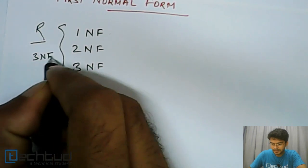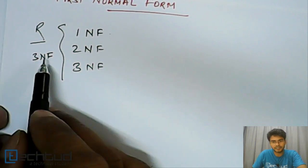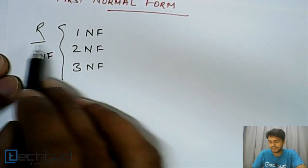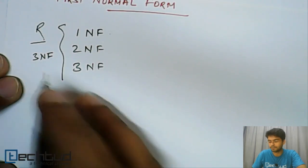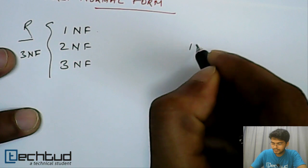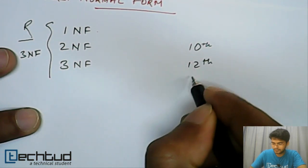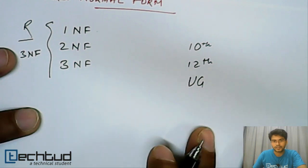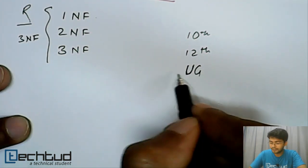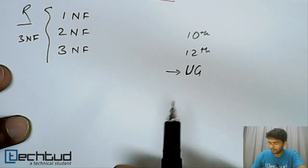The highest criteria and the highest normal forms criteria it satisfies, we say that this particular relation is in that particular normal form. It is something like a student is, let's say 10th pass, then 12th pass, and then graduation, UG. Then what will be the qualification of the student? He will be saying undergraduate, right? Or graduation.